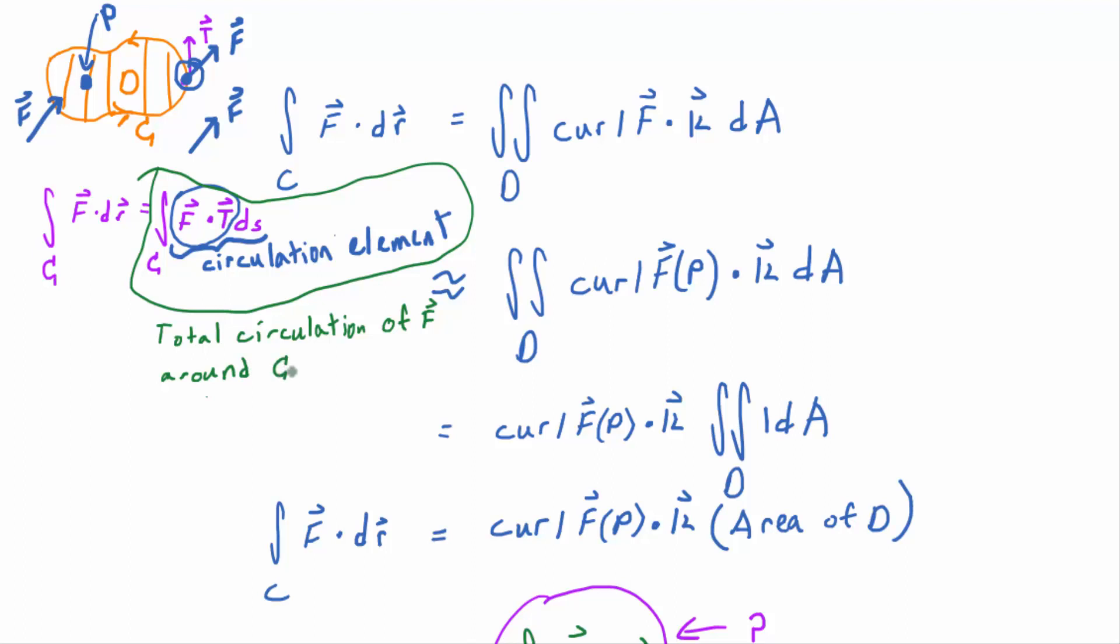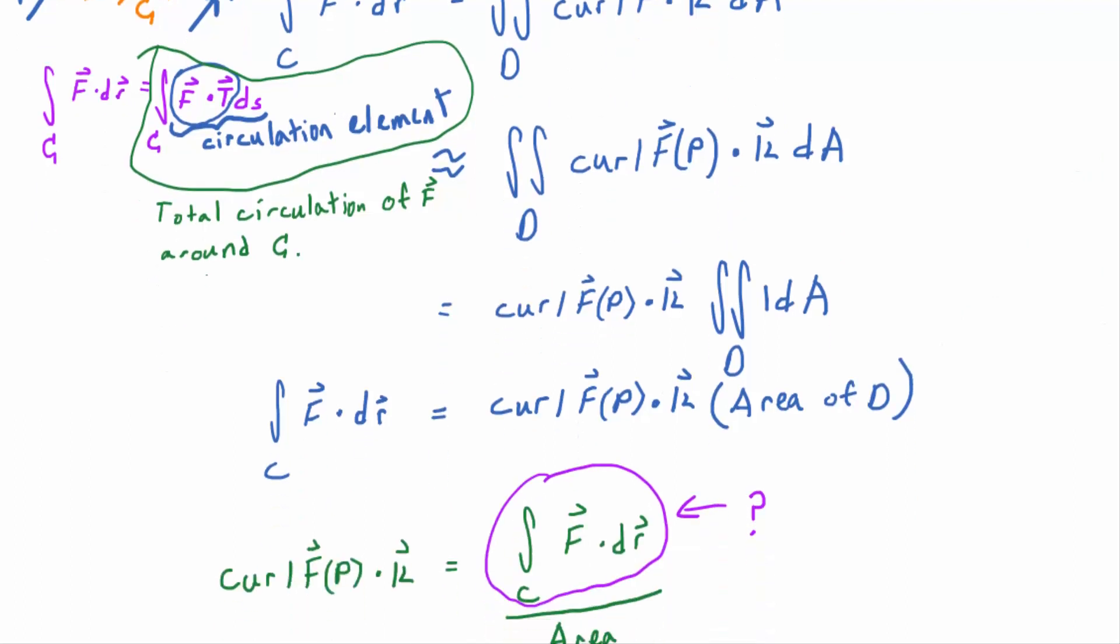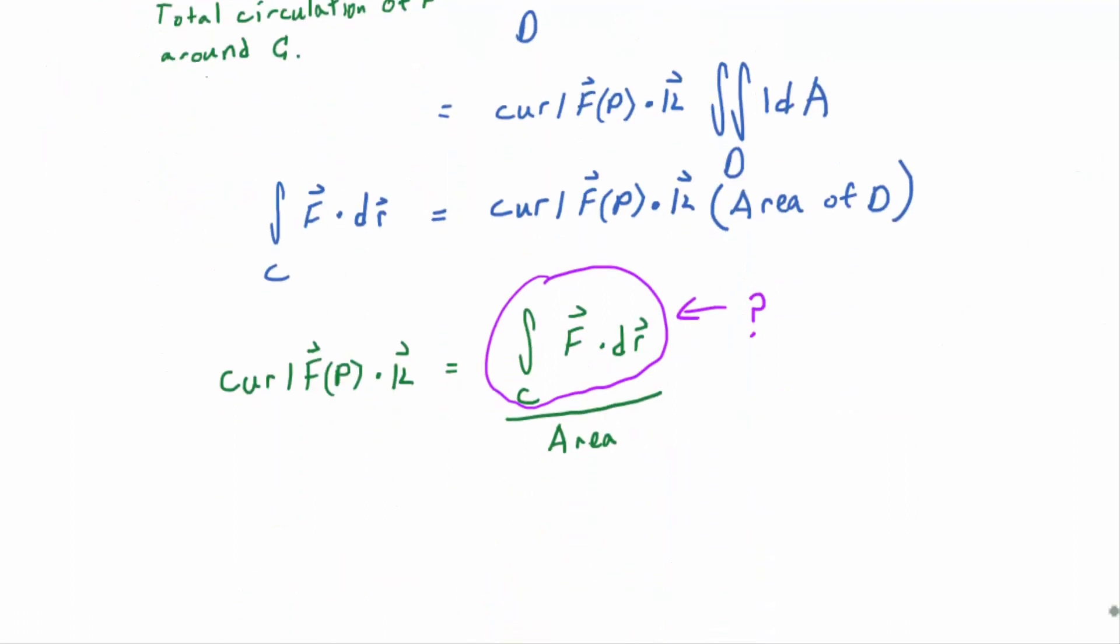We're not going to get into units here, but we'll just say this. The bigger that line integral is, the more the vector field is circulating around C. And keep in mind, this interpretation only works if we have a closed curve. So now let's go back to this relationship down here. If we call this guy circulation, then we get an idea of where the name curl comes from.